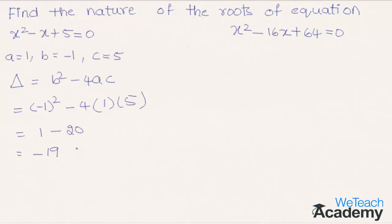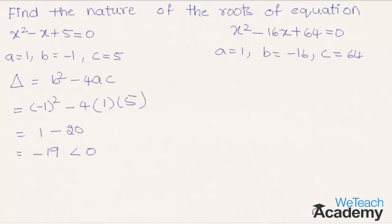Since the delta value is negative, that is less than 0, the roots of the equation are imaginary. Now let us solve the second equation. Comparing x squared minus 16x plus 64 equal to 0 with ax squared plus bx plus c equal to 0, we get a equal to 1, b equal to minus 16, and c equal to 64.